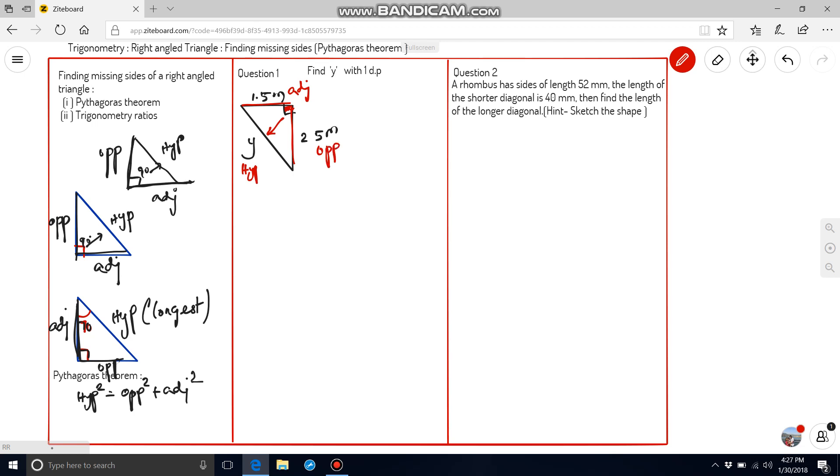We can apply Pythagoras theorem. Hypotenuse square is equal to opposite square plus adjacent square. Hypotenuse is known as y, y square, opposite is 2.5 plus adjacent is 1.5 square. Value of 2.5 square is 6.25, 1.5 square is 2.25. Adding these two values, we are getting 8.5, which is y square.